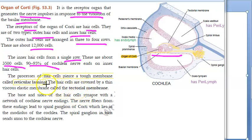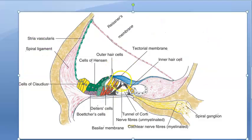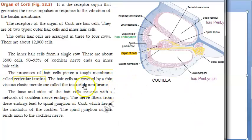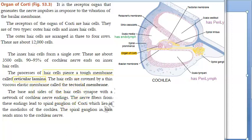The processes of hair cells pierce a tough membrane called the reticular lamina. The hair cells are also covered by the elastic tectorial membrane — the gelatinous structure we saw earlier.